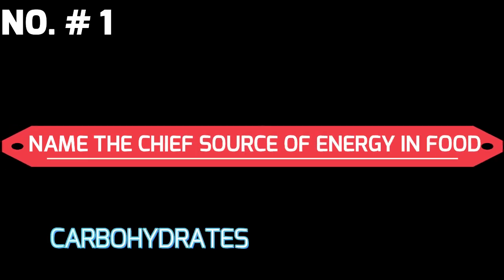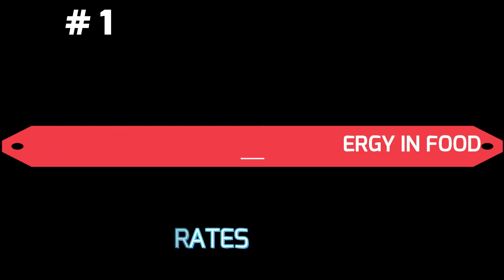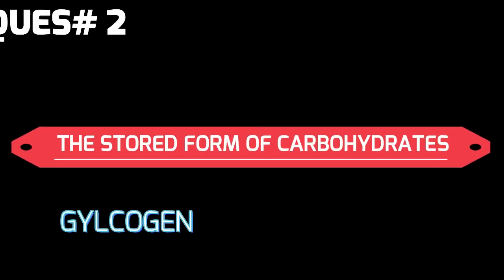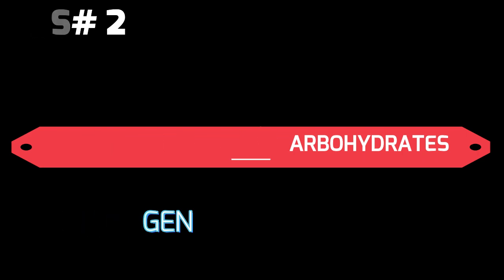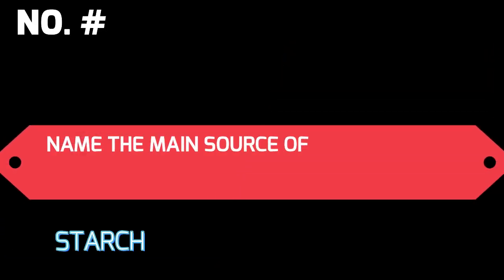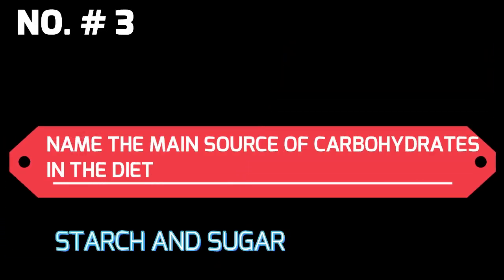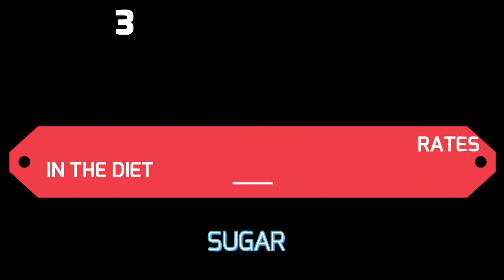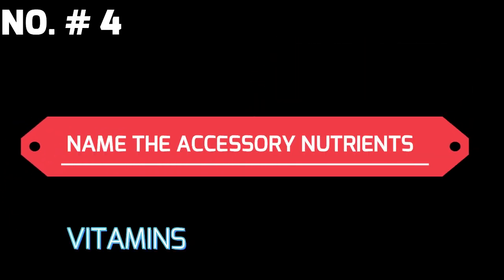Name the chief source of energy in food. Answer: carbohydrates. The stored form of carbohydrates is glycogen. Name the main source of carbohydrates in the diet. Answer: starch and sugar.